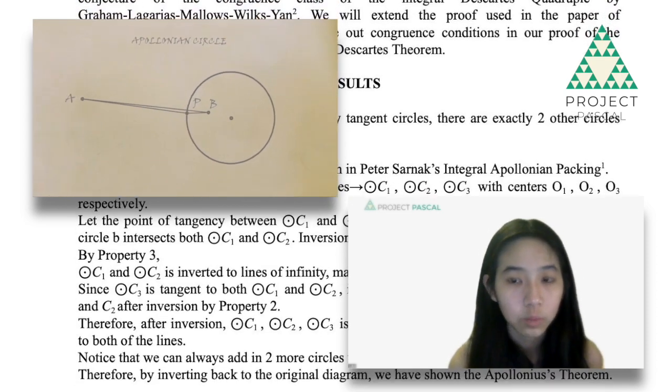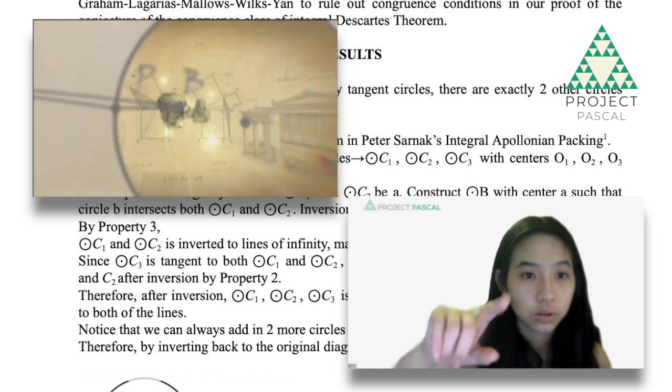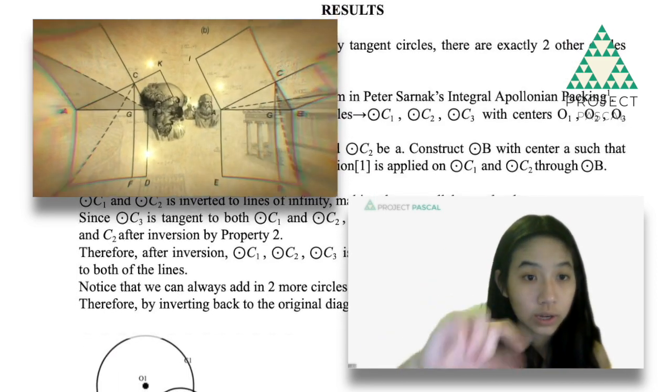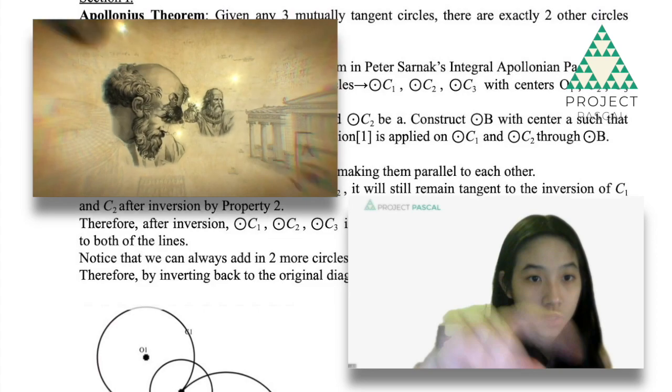So if you could visualize it, it would be one large circle and then three mutually externally tangent circles and there will be a very small circle in the center.